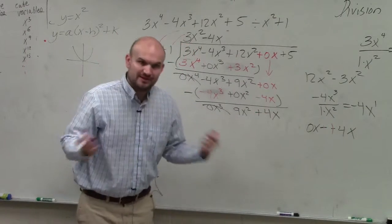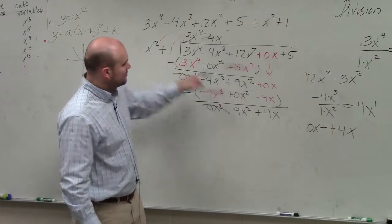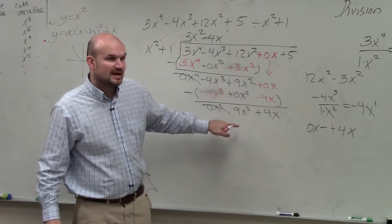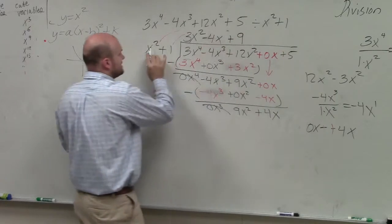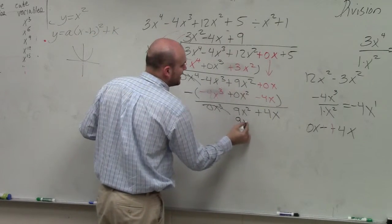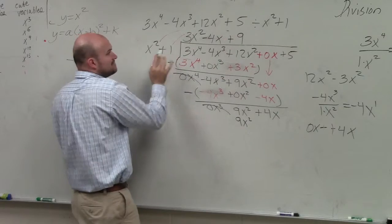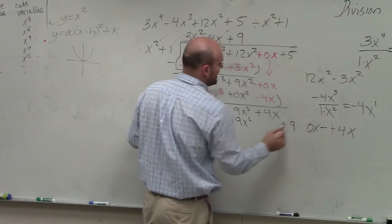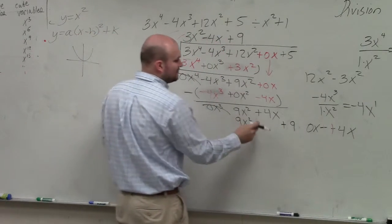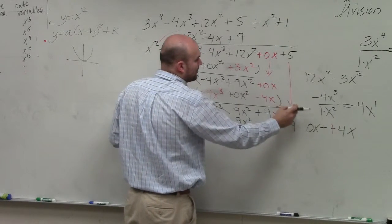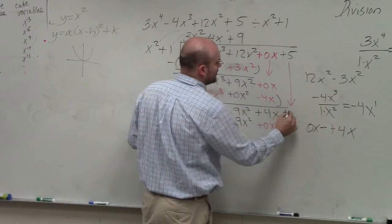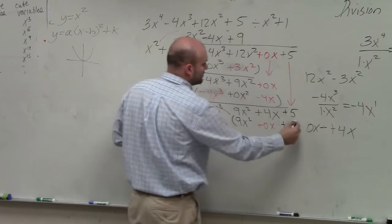Now again, we keep on doing the process. x squared divides into 9x squared how many times? Positive 9 times. 9 times x squared is 9x squared. 9 times 1 is going to be a positive 9. I don't have an x to the fourth, so I'll put in my space value. I'll bring down this 5.